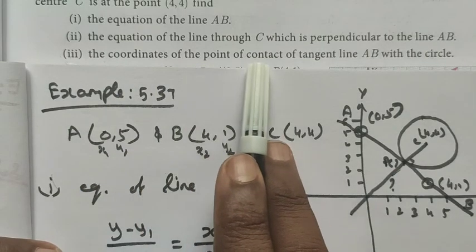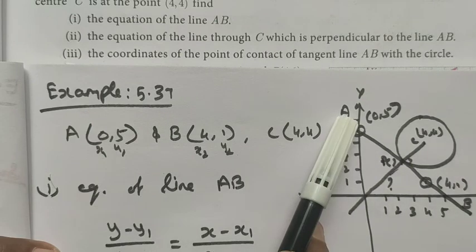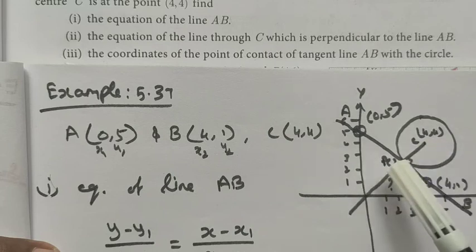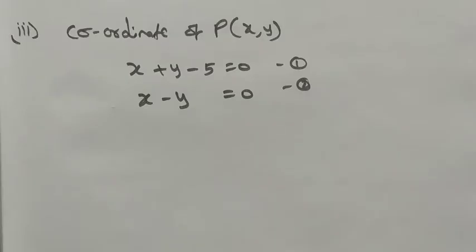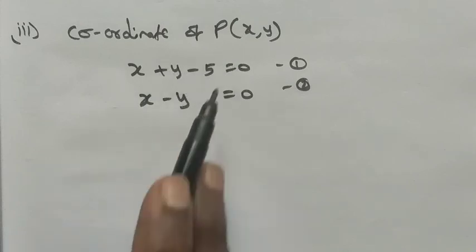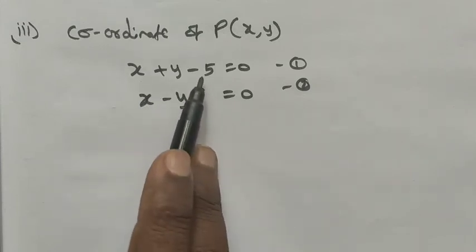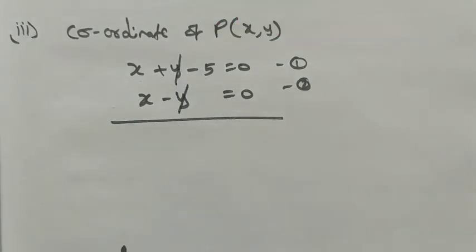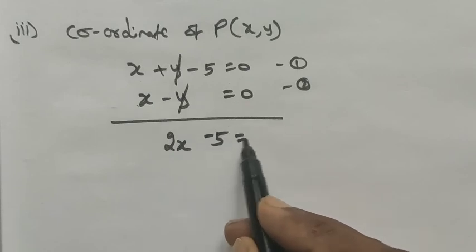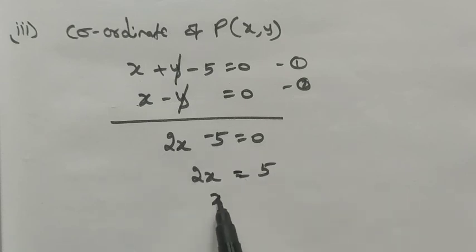Next, we want to find the coordinates of the point of contact P of the tangent line AB with the circle. We have two equations: equation 1 is x + y - 5 = 0 (line AB), and equation 2 is x - y = 0 (perpendicular line). Adding both equations: 2x - 5 = 0, so x = 5/2.